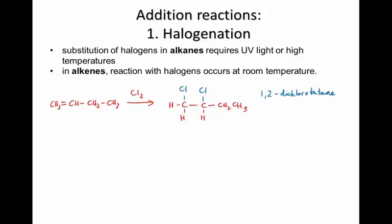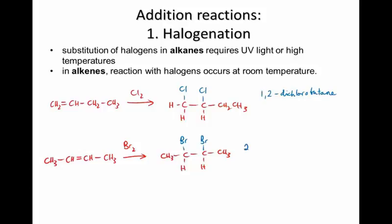How about 2-butene plus bromine? Let's draw that out. The result will be, with the new atoms, a bromine on each of the carbons that originally had the double bond attached to it. You may be able to guess that the name of this molecule is 2,3-dibromobutane.